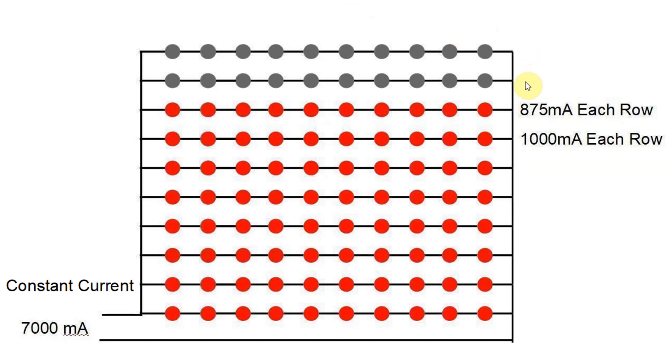Then the current increases to 875 milliamps, and they definitely won't take that for very long. And when another one blows out, it'll increase to 1000 milliamps each row. Then the rest of them will just go off in a cascade, and you'll lose the entire chip.